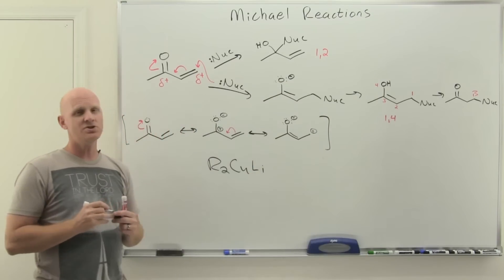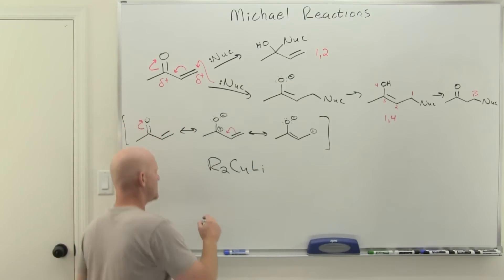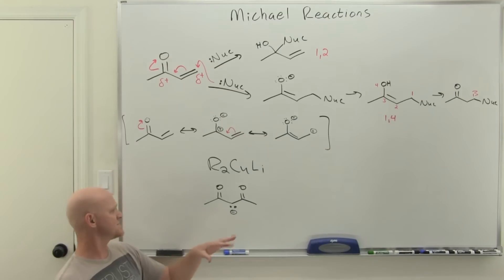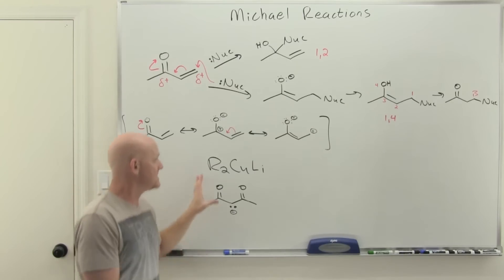However, the Michael donors we're going to talk about—the Michael nucleophiles—are the ones that are going to attack at this beta position. They really fall into a couple different categories: the Gilman reagents, those lithium dialkyl cuprates R2CuLi, and then also these big enolate ions where you have an enolate that is resonance stabilized with two oxygens.